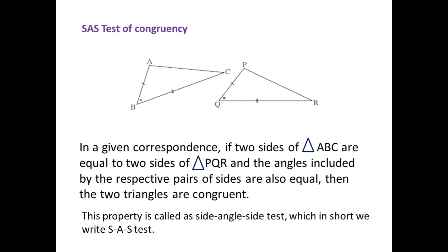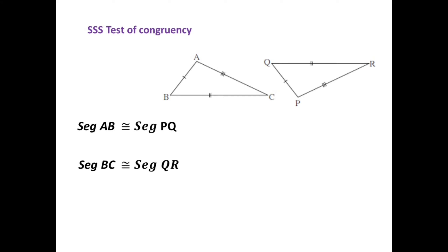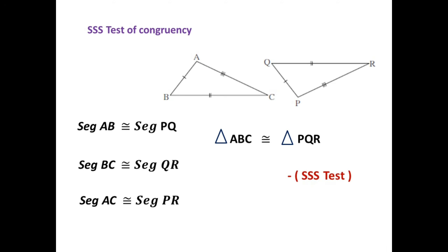The next test is the SSS test of congruency. Consider two triangles ABC and PQR. As seen in the diagram, only sides are involved: side AB is congruent to side PQ, side BC is congruent to side QR, and side AC is congruent to side PR. Therefore these two triangles are congruent by the SSS test.